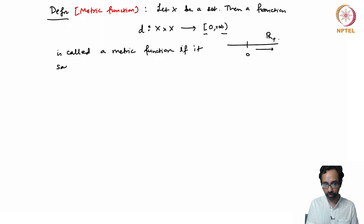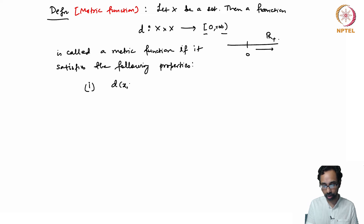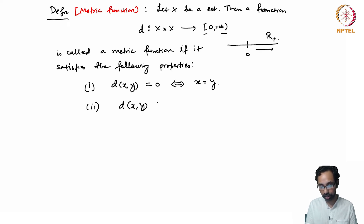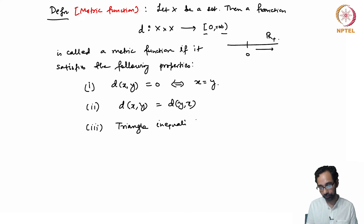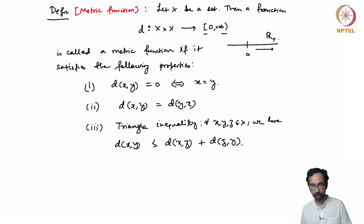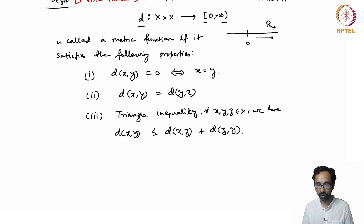This function d is called a metric function if it satisfies the following properties. First, d(x,y) = 0 if and only if x = y. Second, d(x,y) = d(y,x). Third, the triangle inequality: for any three points x, y, and z in X, we have d(x,y) ≤ d(x,z) + d(z,y). A function d defined on X × X is called a metric function if it satisfies all three of these properties.